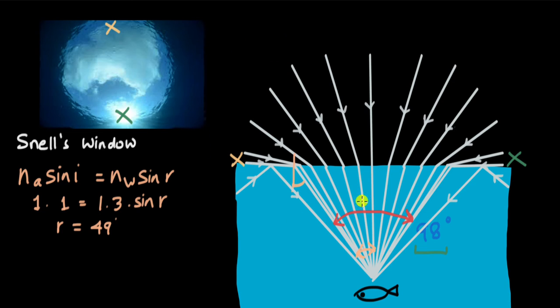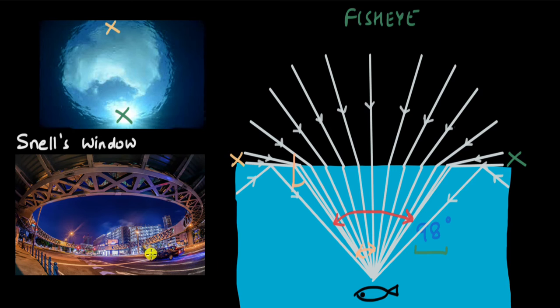This whole idea of Snell's window is used in photography. The lens used is called a fisheye lens. If you take a photo with such a lens, you get a view of 180 degrees.